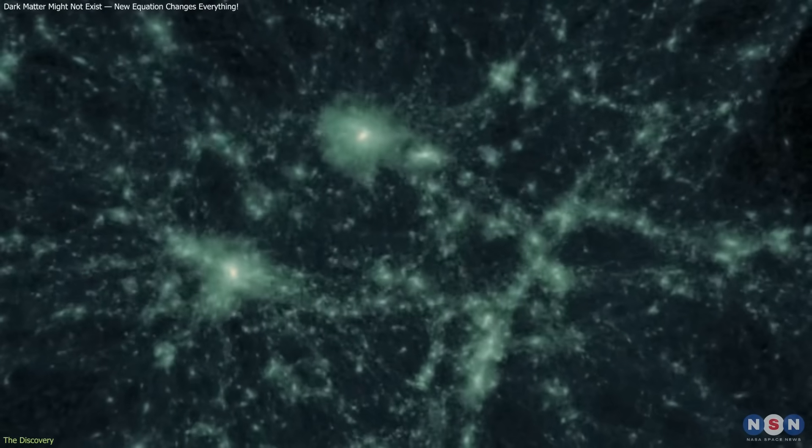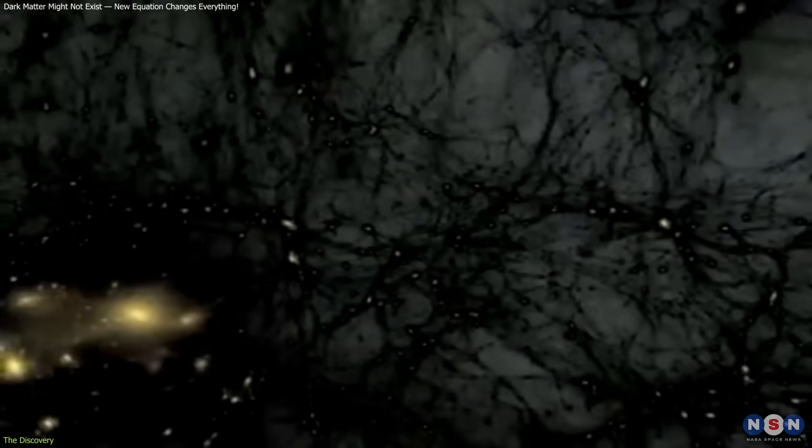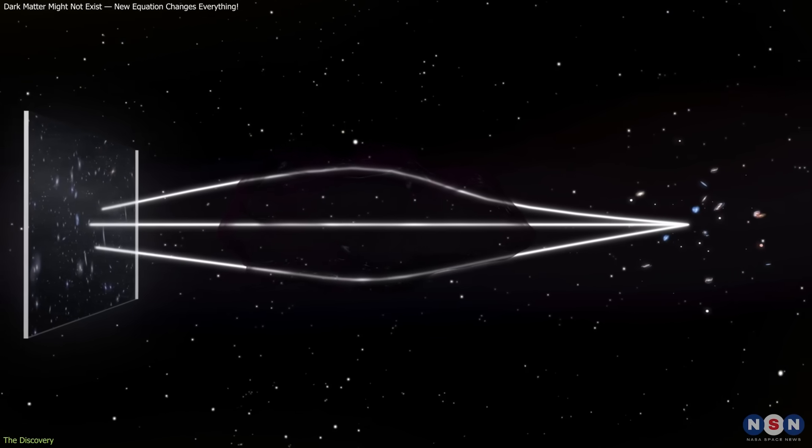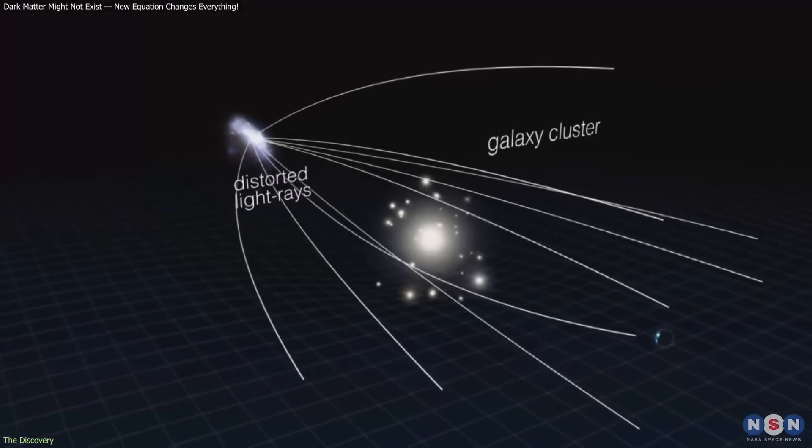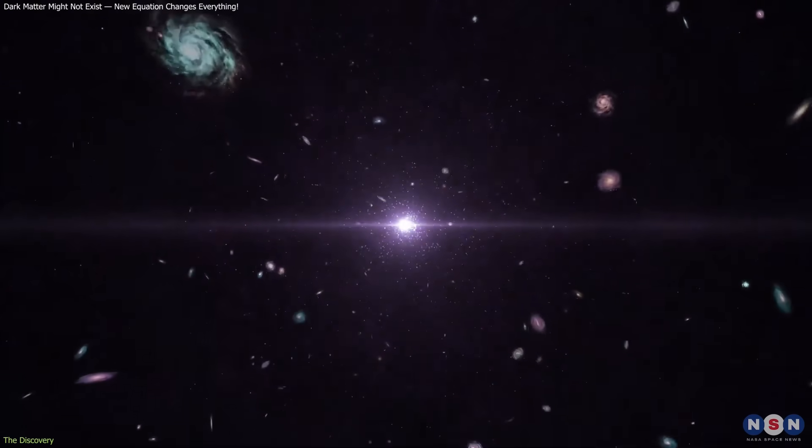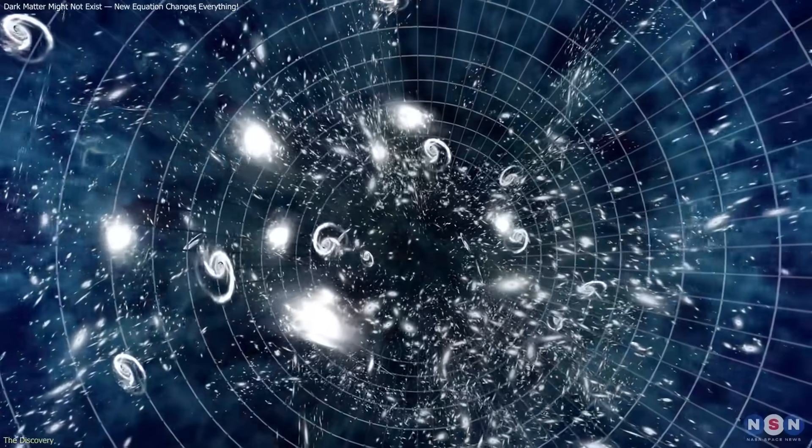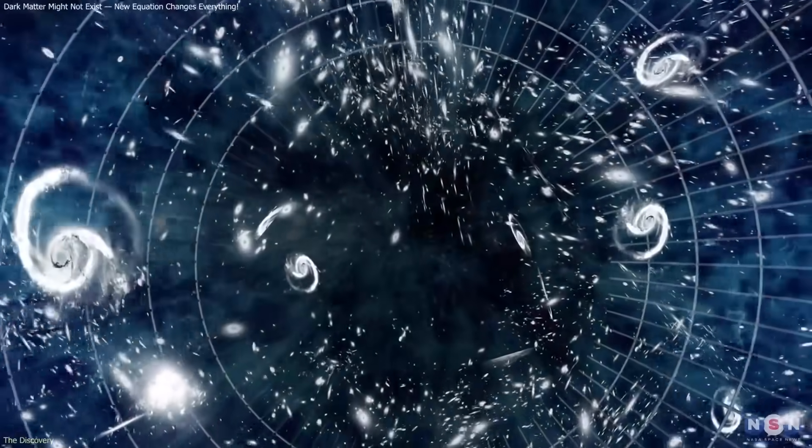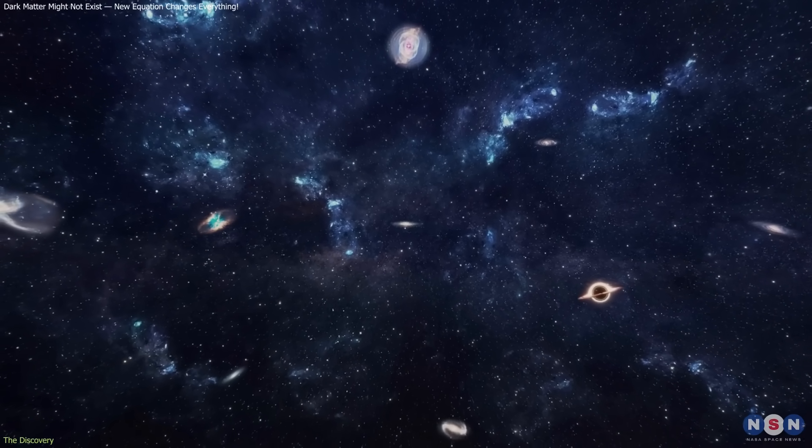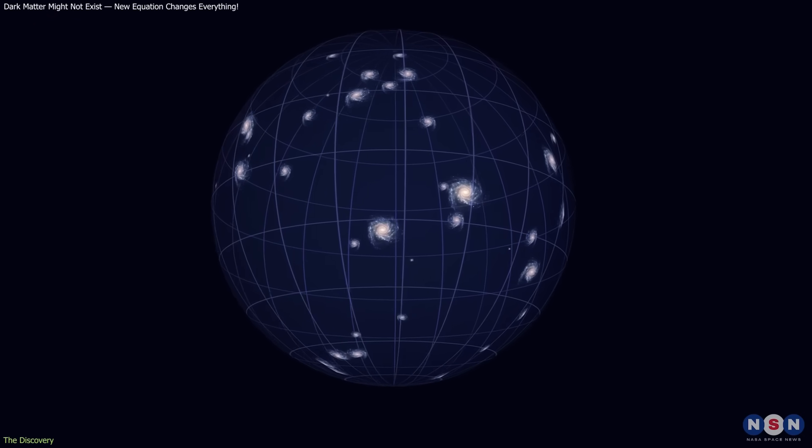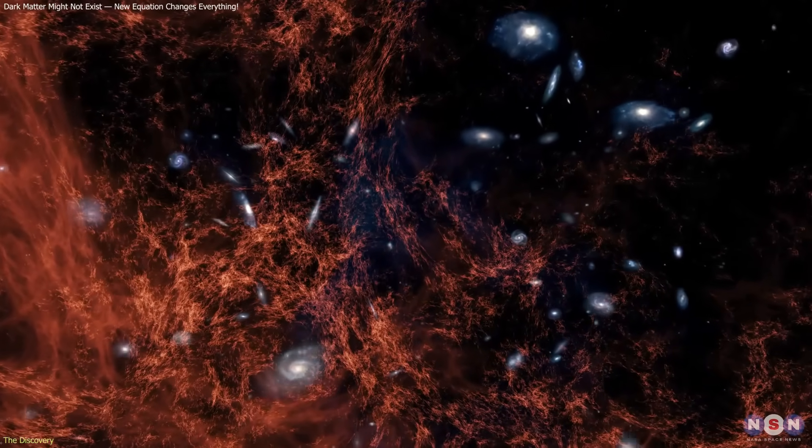For almost a century, dark matter and dark energy have been pillars of modern cosmology. Together, they supposedly make up 95% of the cosmos. We don't detect them directly, yet their influence seems undeniable, from the fast rotation of galaxies to the bending of light around clusters and the accelerating expansion of space itself. Professor Rajendra Gupta from the University of Ottawa believes these observations can be explained without invoking unseen matter or mysterious energy. In his new research, he argues that the universe's fundamental forces may slowly weaken over time. As the cosmos expands, the strengths of nature's constants, such as gravity, might subtly evolve, producing effects we currently attribute to dark matter and dark energy.